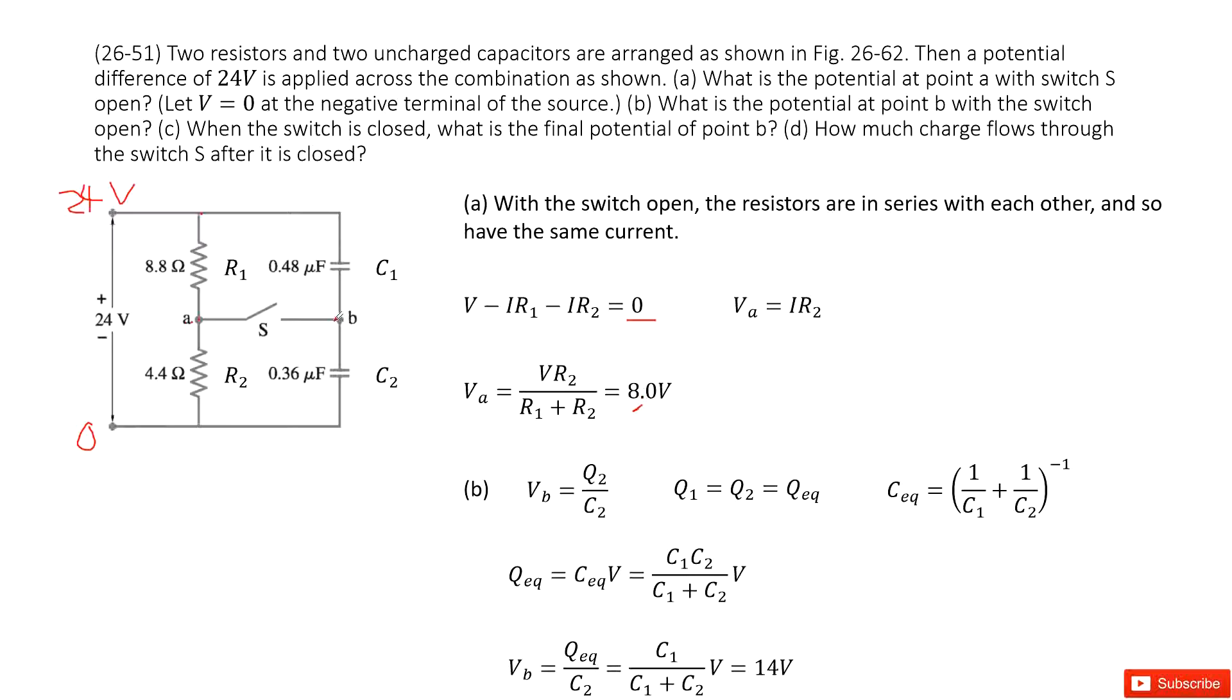The next one, we need to find the potential at point B. So at point B, we can see it looks like we must get the voltages for this one, for the V2. That is the Q2 divided by C2.